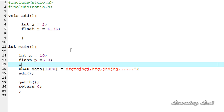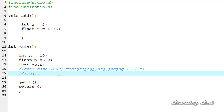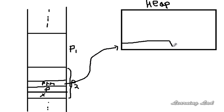We can create a pointer in our program — say char *ptr — and allocate memory dynamically from the heap, making the pointer ptr point to that allocated memory. So we create a pointer here and make it point to the amount of memory required, which is allocated from the heap. For this purpose we use memory allocation functions in C.